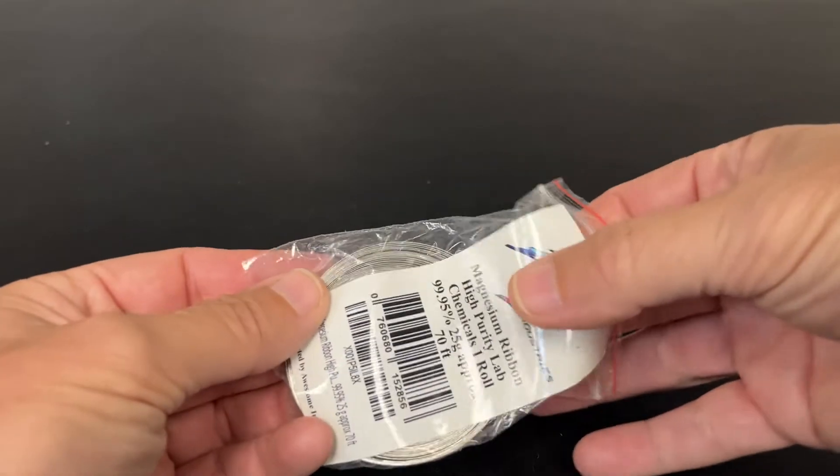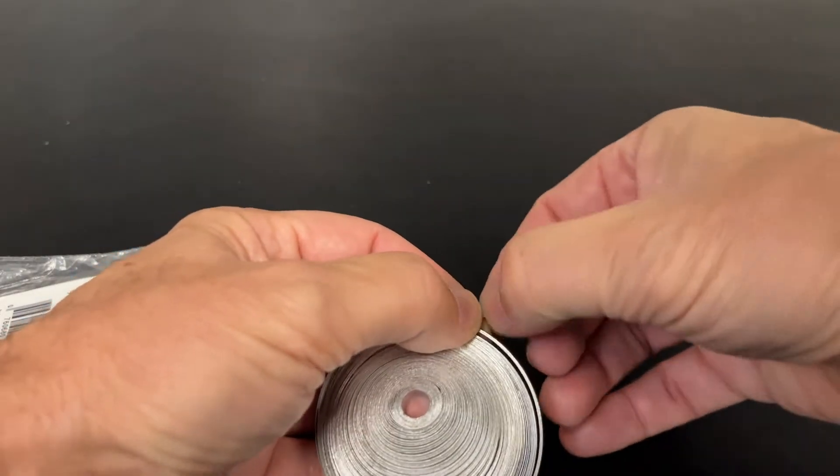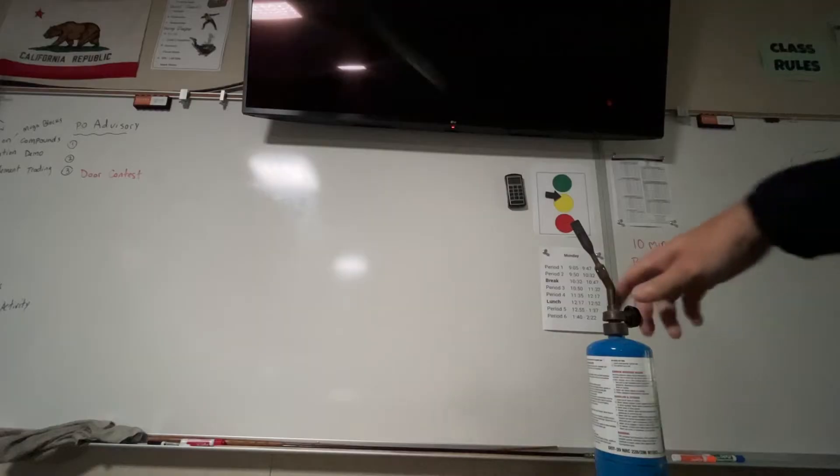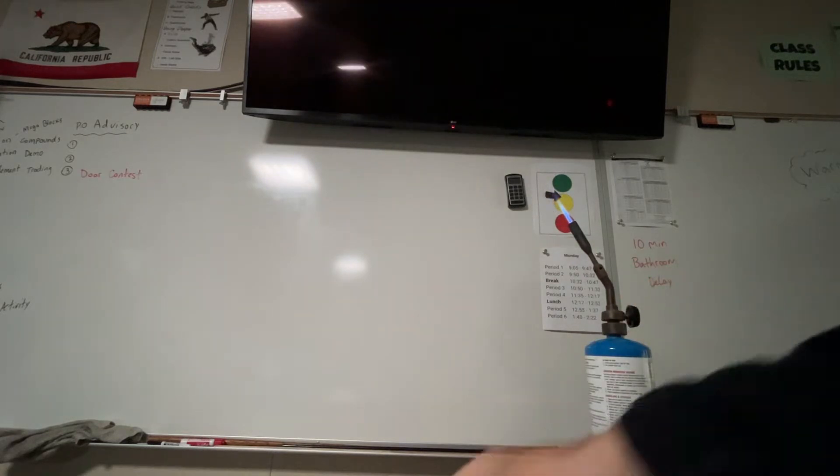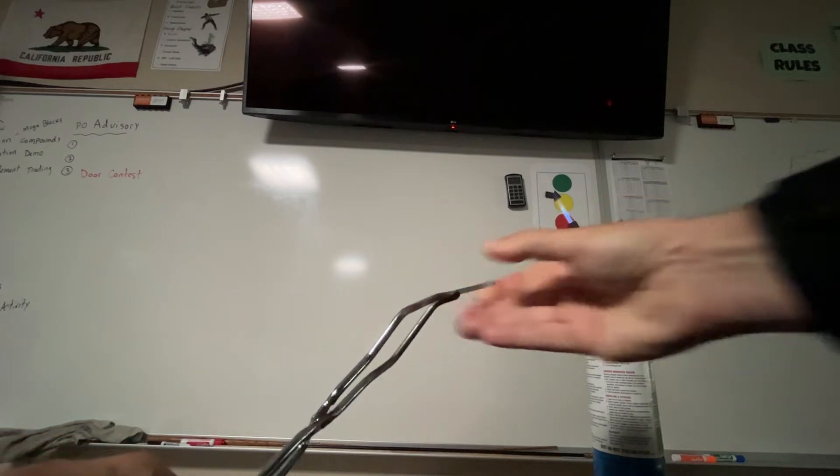All right, so I need to get a piece of this metal to experiment with. I'm just going to tear a piece off the ribbon. It's pretty easy to tear. Now I'm going to light this torch, and then I'm going to take the ribbon and put it in a pair of tongs and put it in the flame.